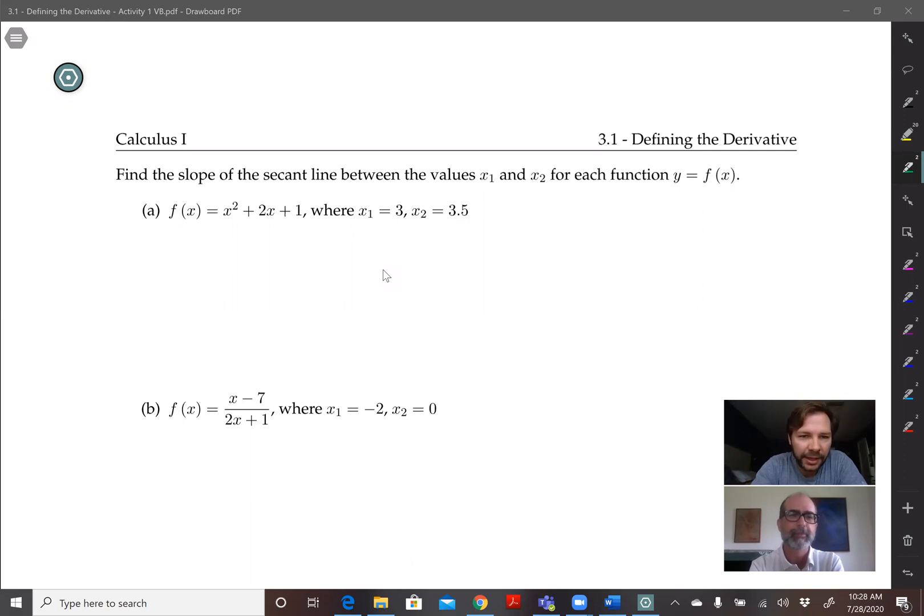So in part A here, we're asked to find the slope of the secant line for when x1 is 3 and x2 is 3.5 for the function f(x) = x² + 2x + 1.